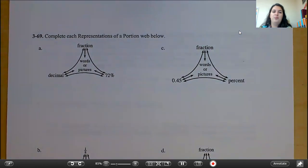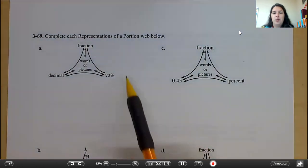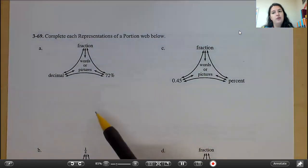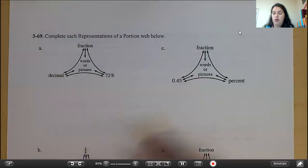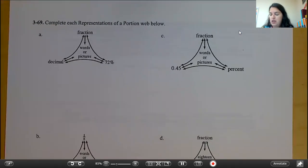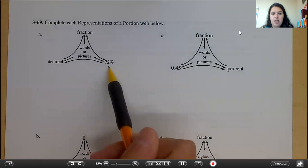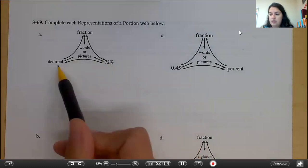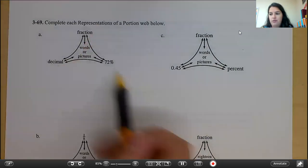269 says complete each representations of a portion web below. So I'm going to do the first one with you and then you are going to be responsible for the rest. So we have 72%. We need to write 72% as a decimal and a fraction. So let's start with a fraction first.